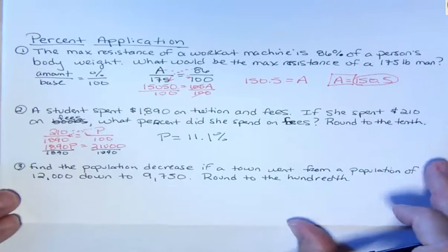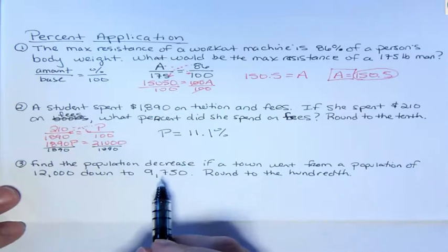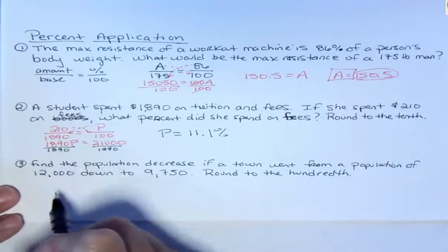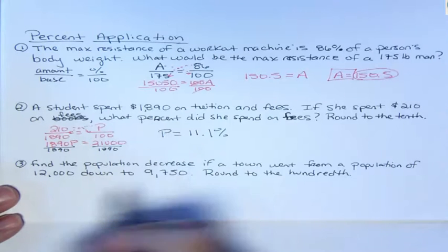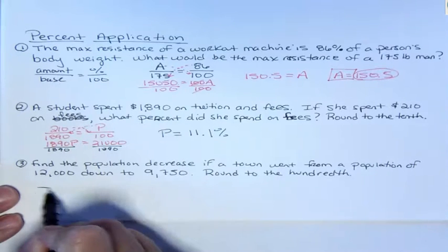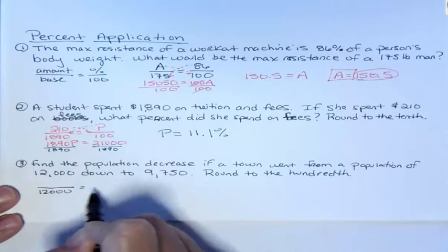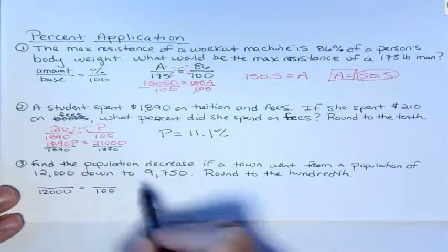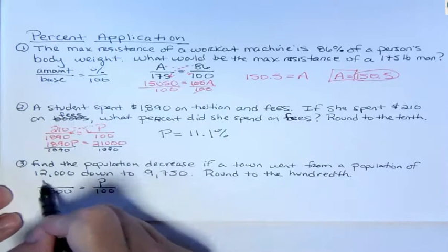I want to find out what the percent was of decrease. Now, this is a little tricky because if I just put the numbers in that I was given, well, let's do that. So you can see it went from 12,000 down to 9,750. And let's just do it that way. The original total was 12,000. Of course, I know the 100. I don't know the percent. That's what I'm looking for. And then I have, I went down to 9,750.